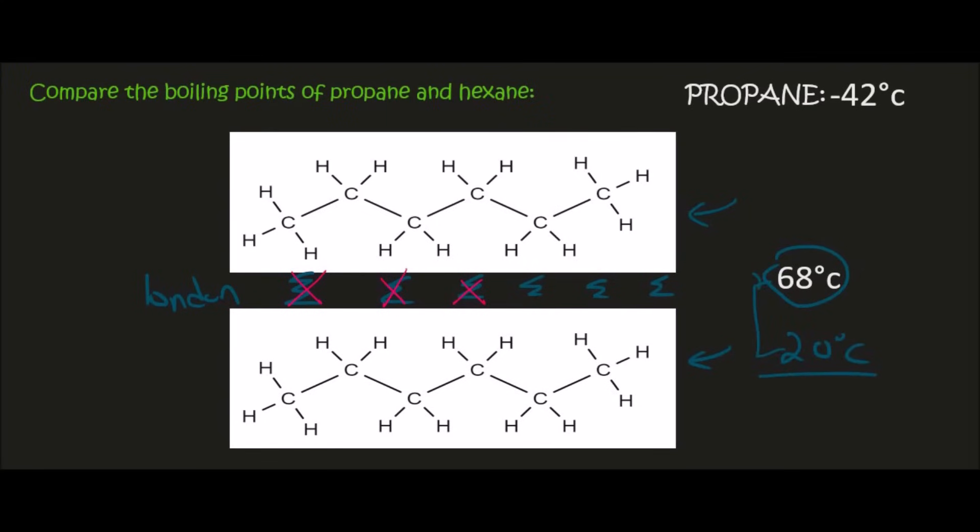This means that at room temperature, which let's assume is about 20 degrees, we haven't yet reached 68. And so hexane will still be in the liquid phase. But if you had to heat it up to 68, it would start turning into the gas phase.